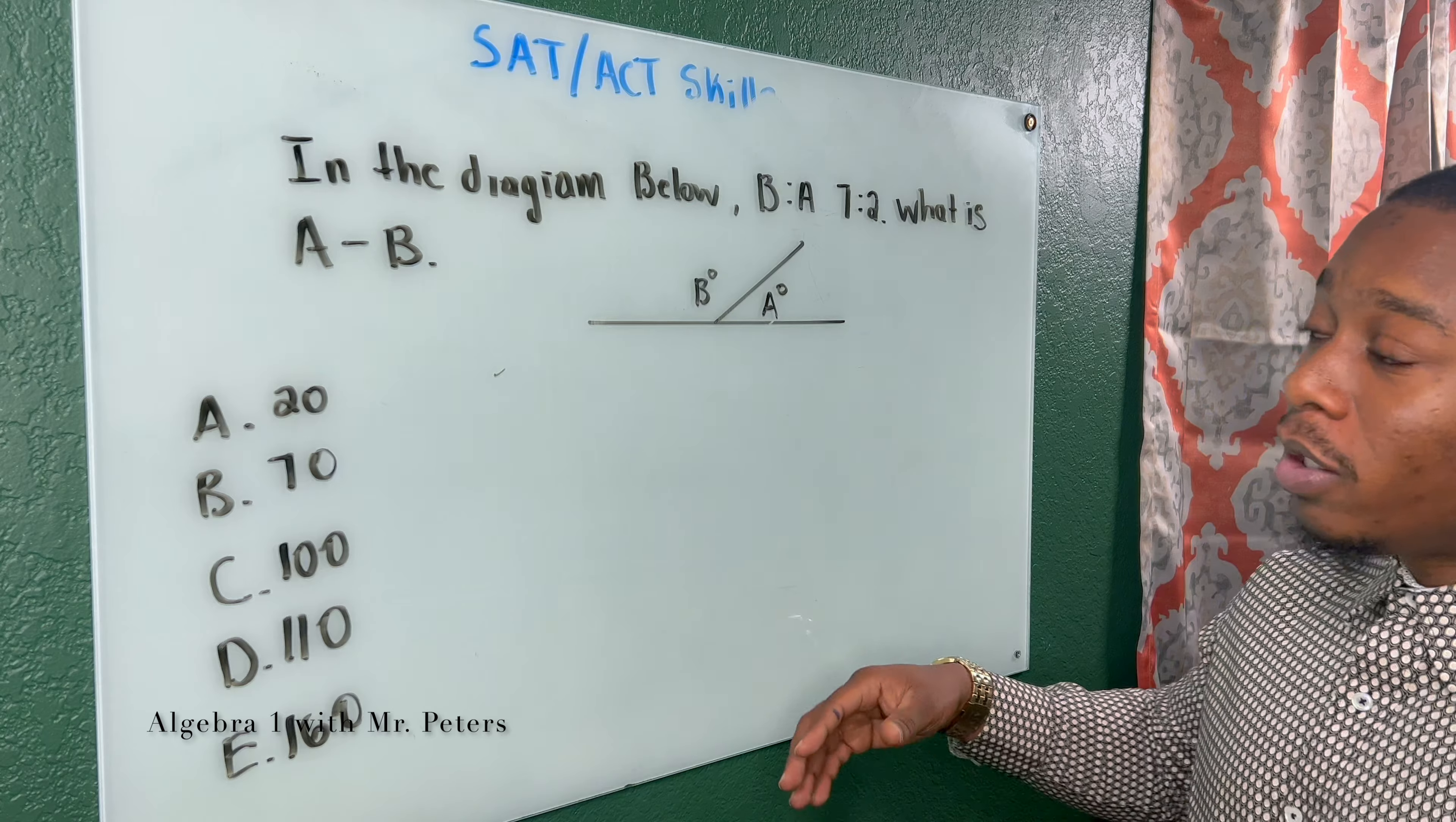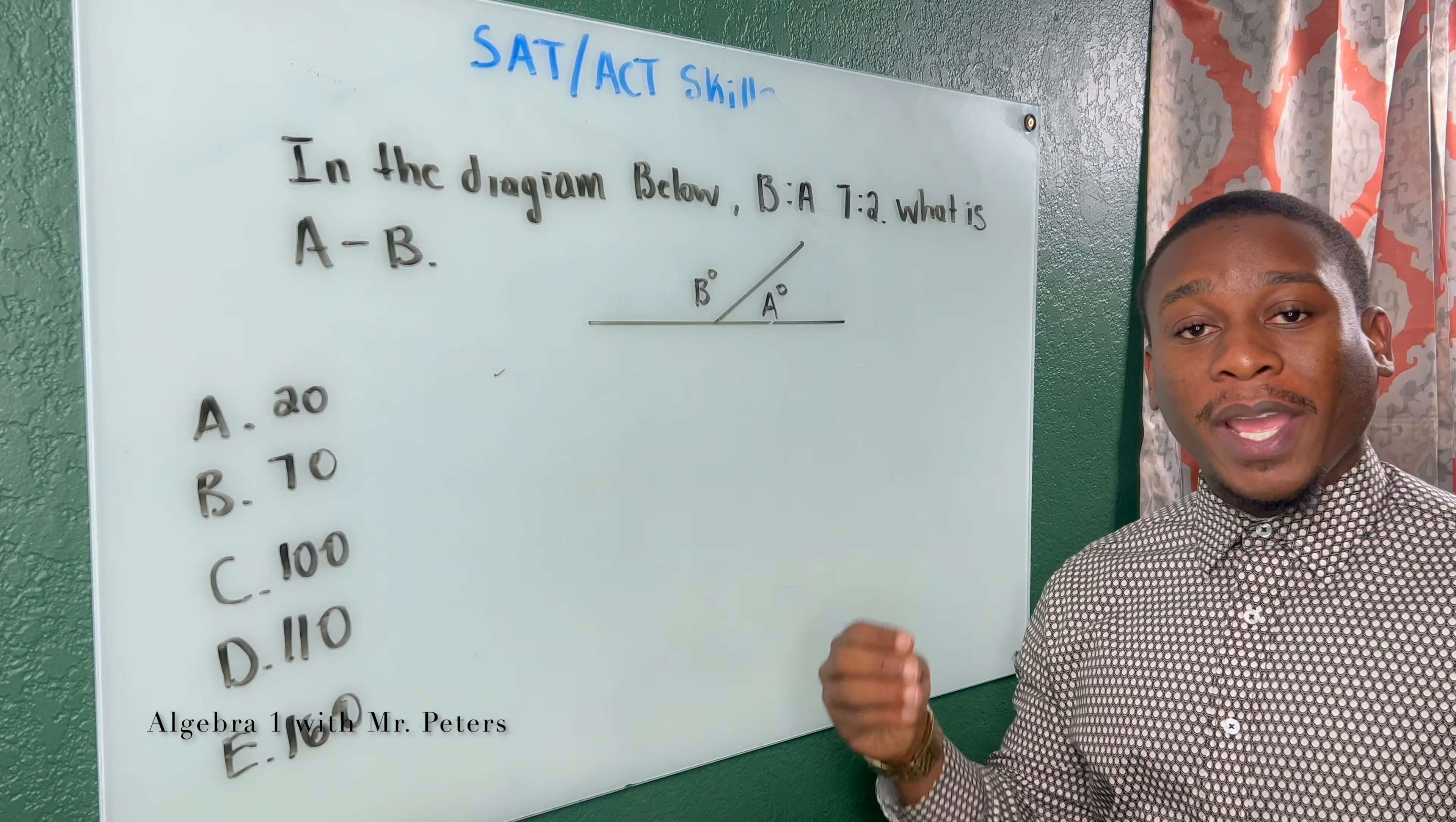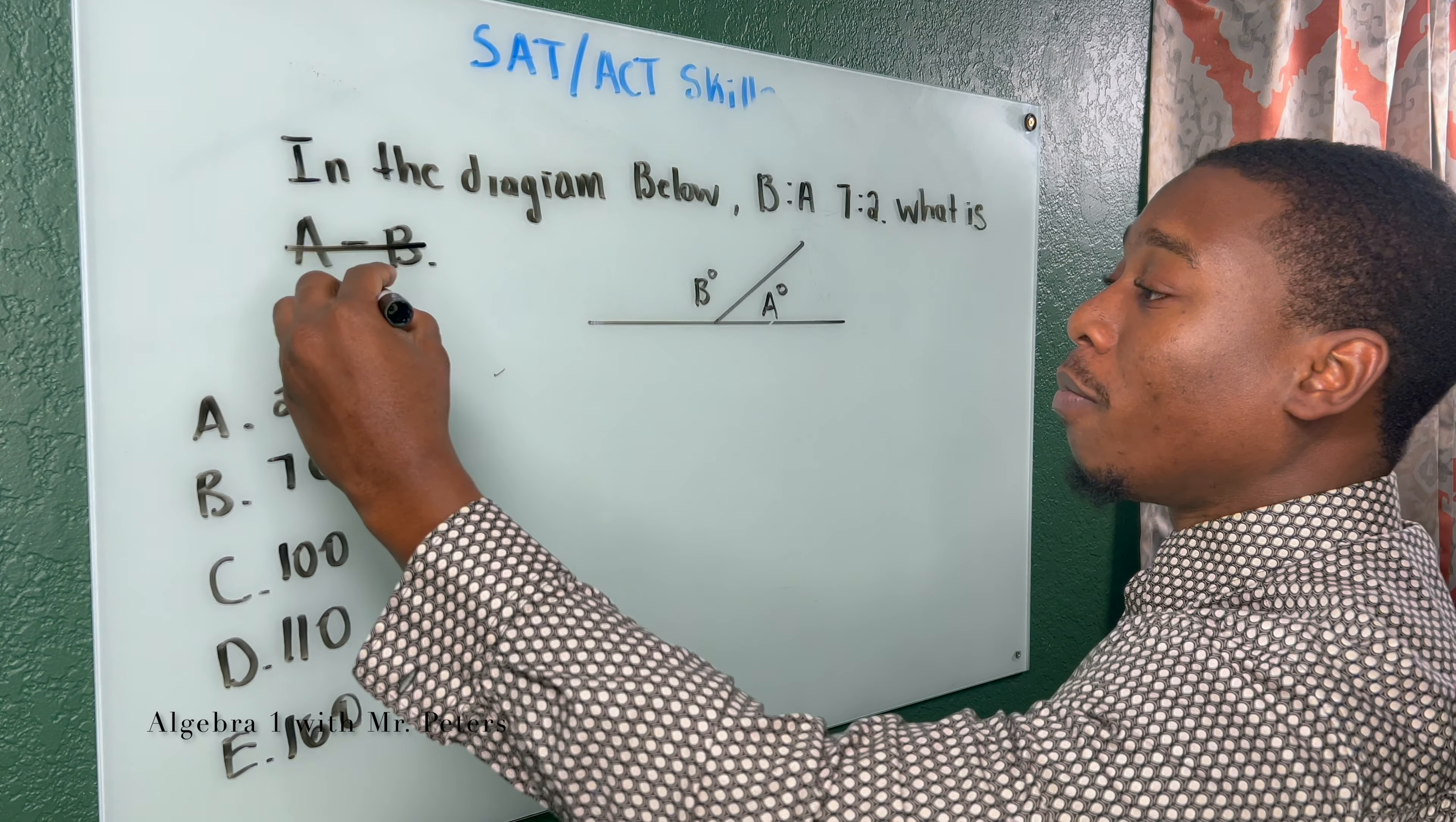In this problem, we're now dealing with ratios and angles. But there's a trick to this. So it says in the diagram below, the ratio of B to A is 7 to 2. And they want us to know what is the value of B minus A.